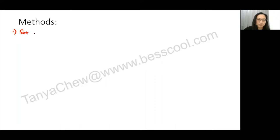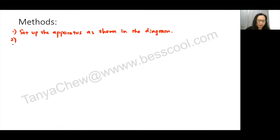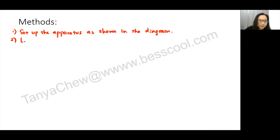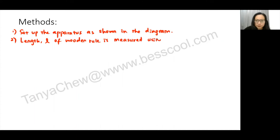The first method step is always: set up the apparatus as shown in the diagram. When writing methods, look immediately at the independent variable — how will you measure it? The length L of the wooden ruler is measured using a metre rule. That's the second method step.